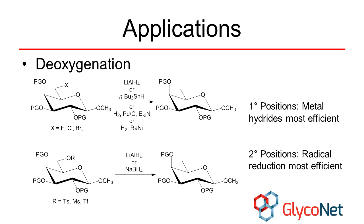Metal hydrides will also reduce sulfonates, though the efficiency is greater with primary groups. Epoxide opening with hydrides is another option.